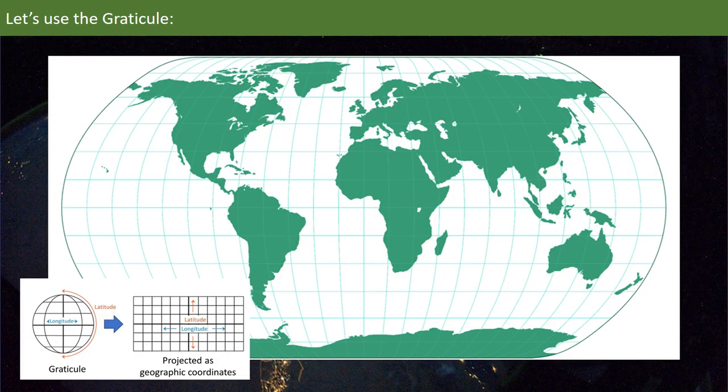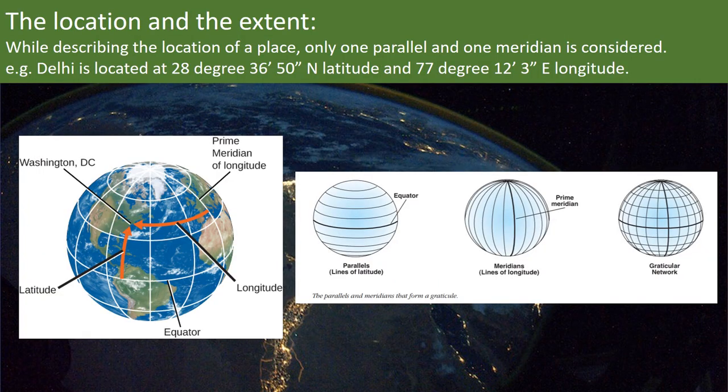The location of a place, the extent of a region and the extent of any linear feature can be described exactly with the help of parallels and meridians, that is with the help of the graticule. So, let us see how to use the graticule for this purpose.